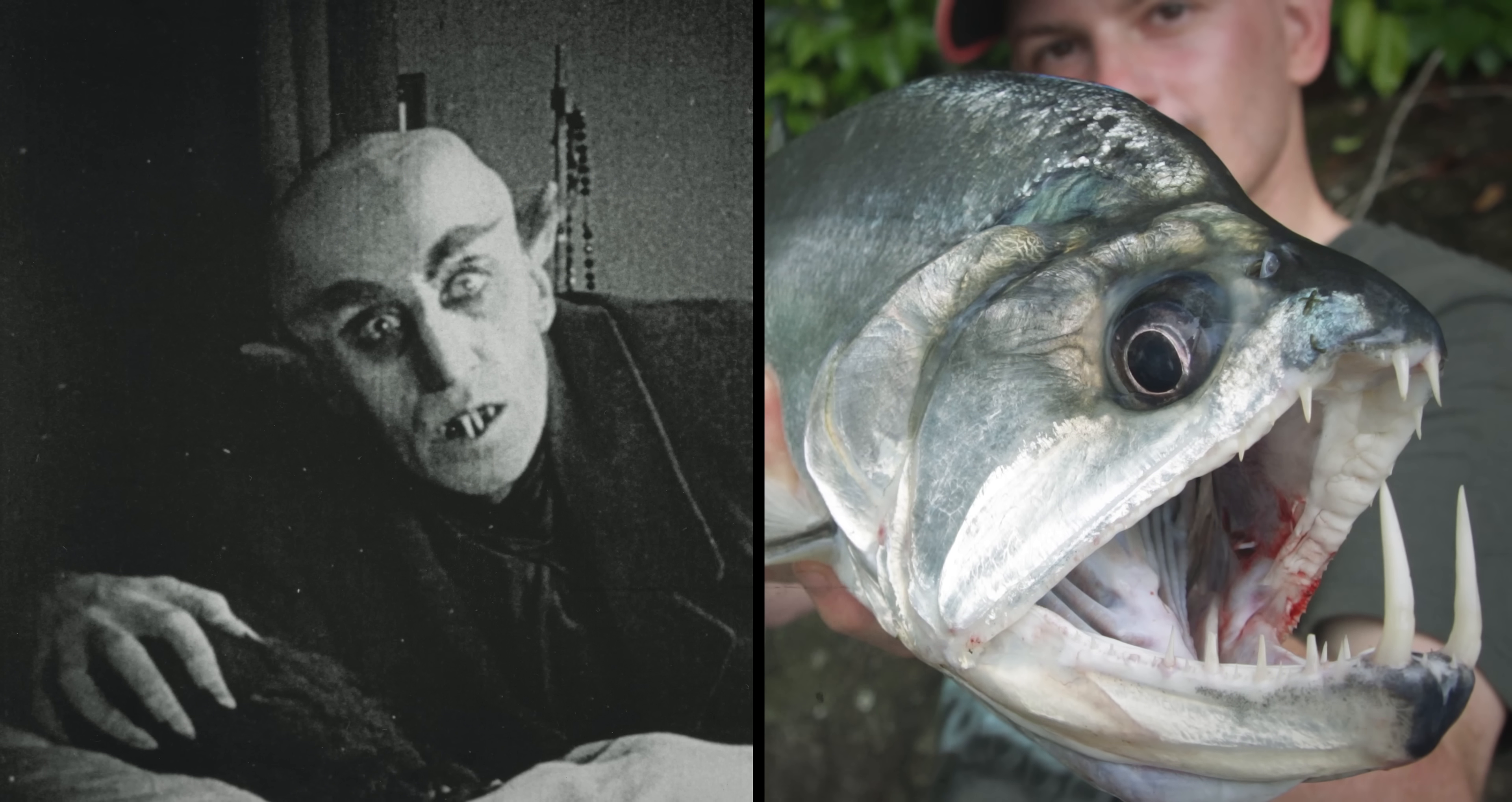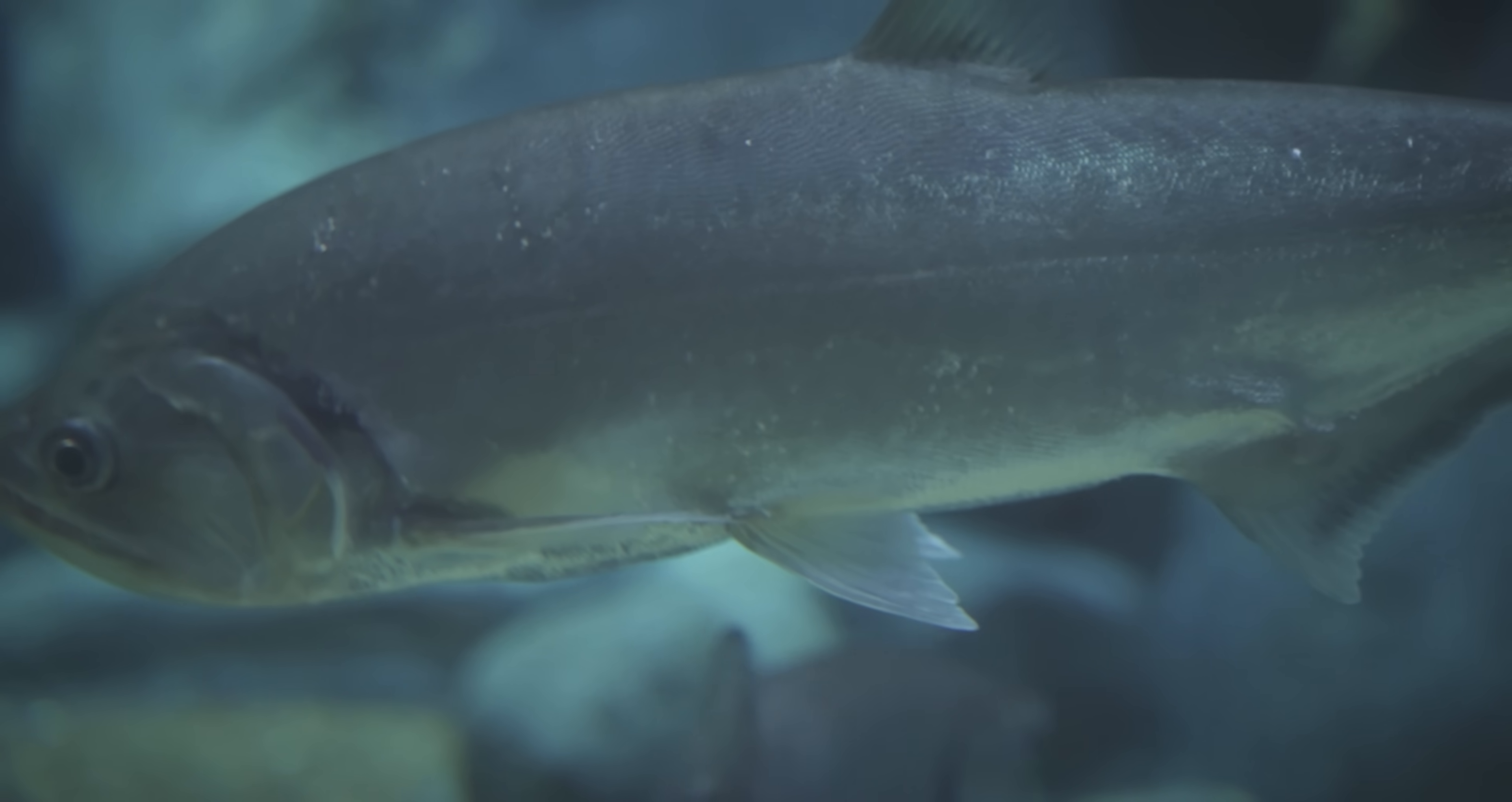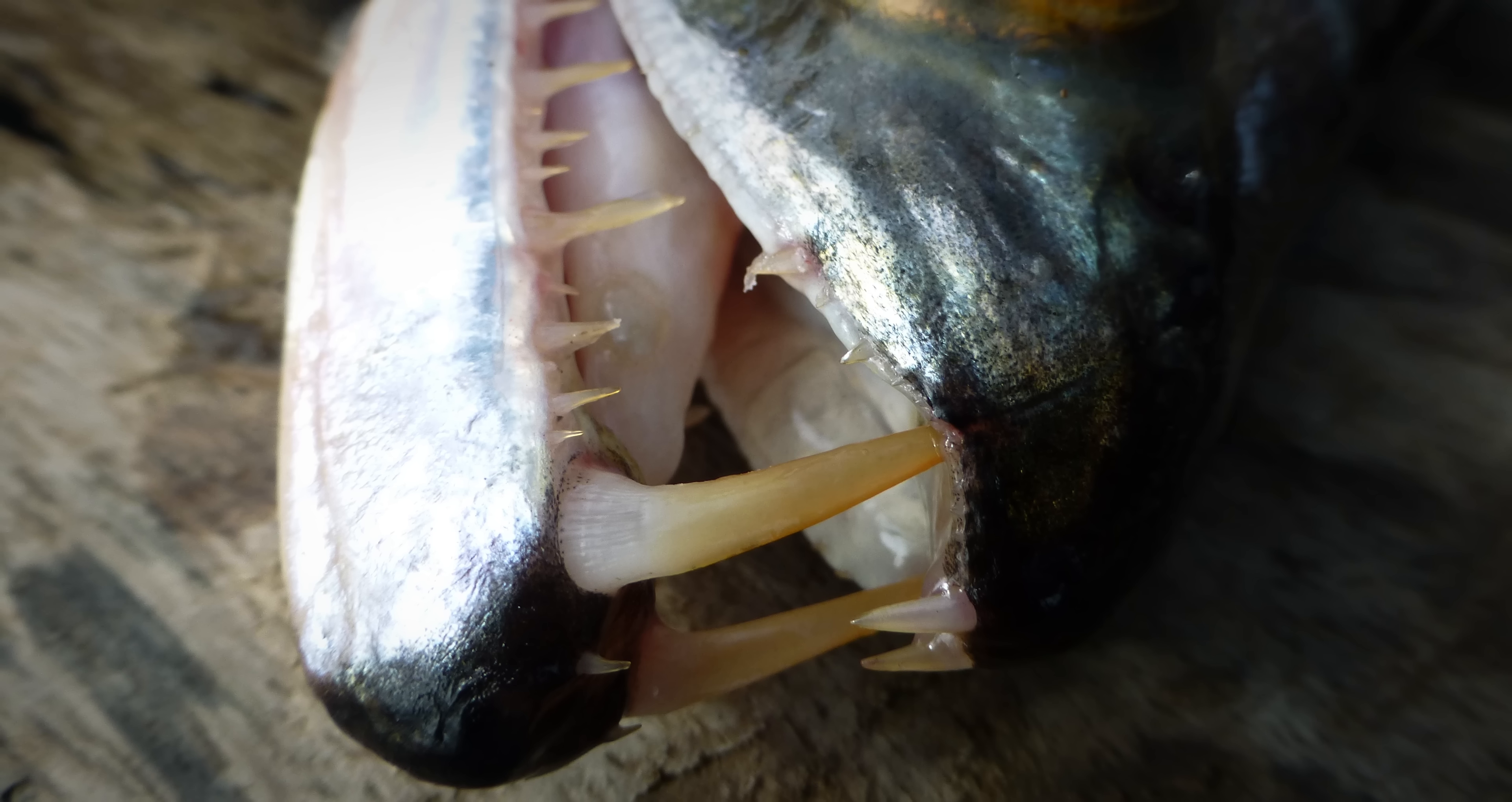And among them, none is weirder than the payara. Often known as the vampire fish due to its resemblance to Nosferatu, this is a hardy fish that feasts on piranhas. It preys on the most famously terrifying fish in the world. They're kind of like the Omar of fish. If you come for the king, you best not miss because the payara is ready to stab you with its massive fangs.